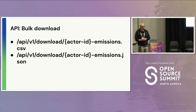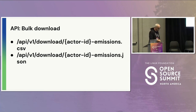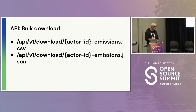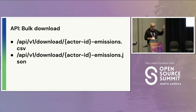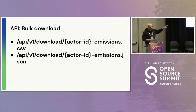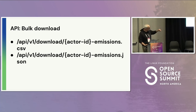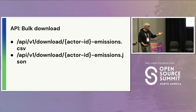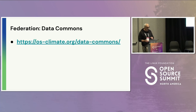One of the big things our users asked for is a big data download. So we have mechanisms for downloading selected parts of the data based on the actors involved, bringing all the information we have on, say, British Columbia down into a single CSV or JSON file that you can then do additional work on.